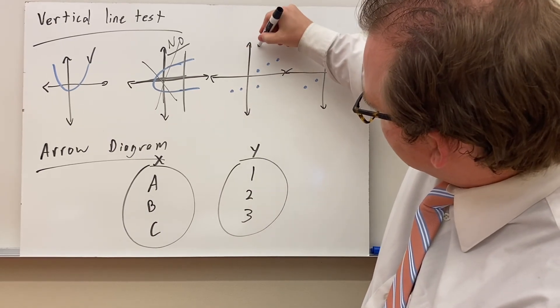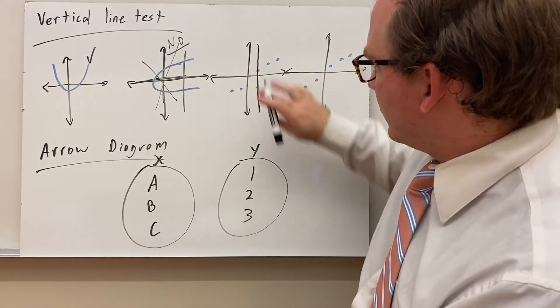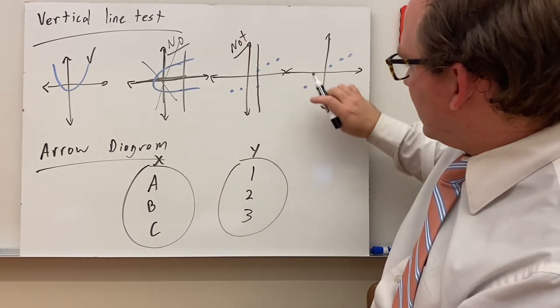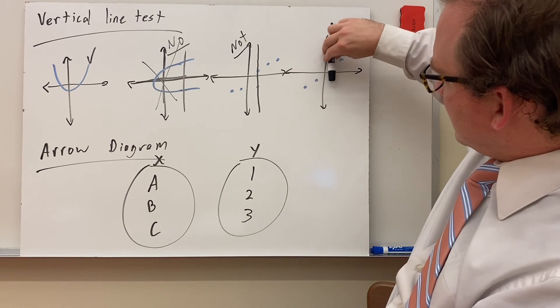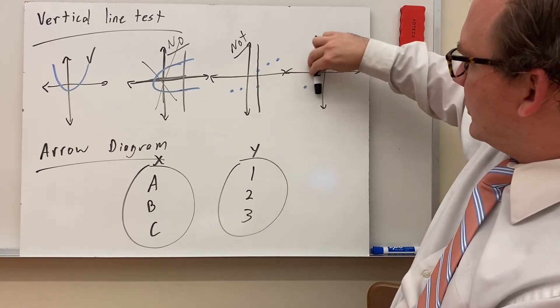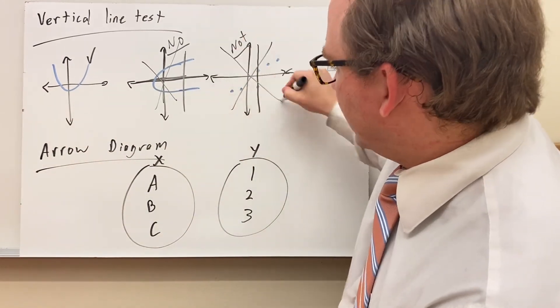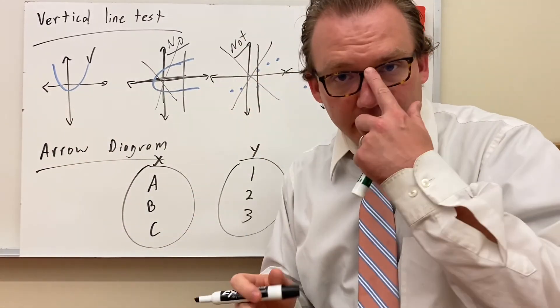This one here is tricky because it's just single dots. Once, once, oh right here this line goes through two points. So when that vertical line goes through two points, this is not a function. However, you could have one like this with just these dots, and at no point does the vertical line go through two. This is a function.